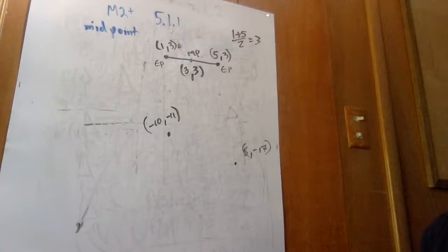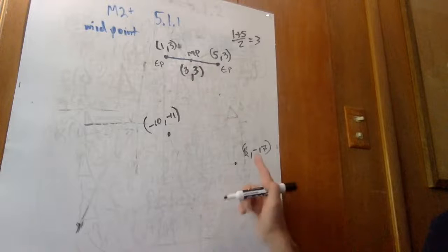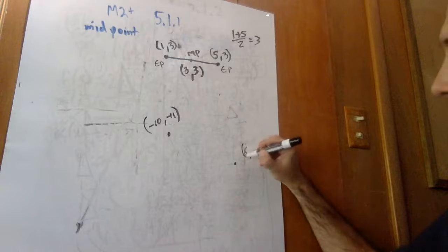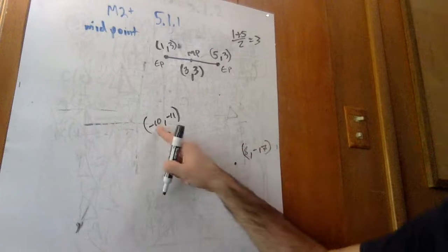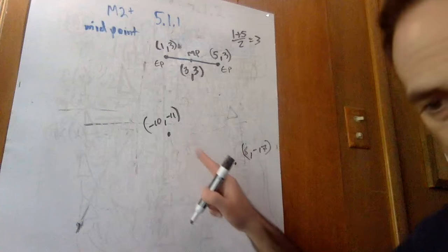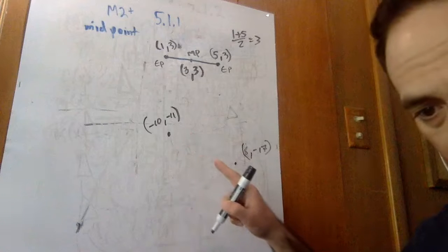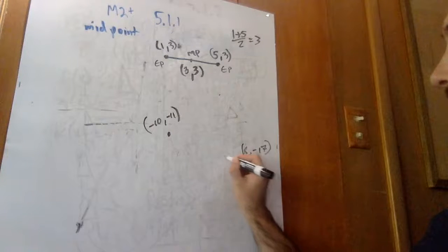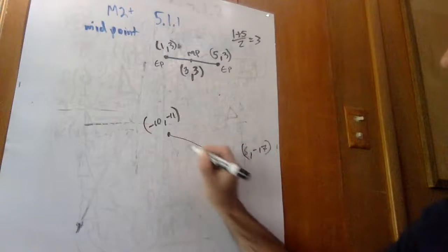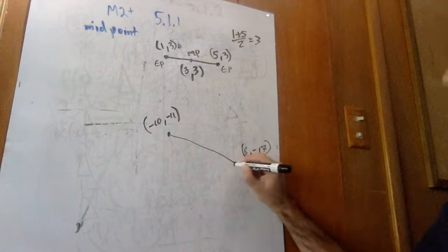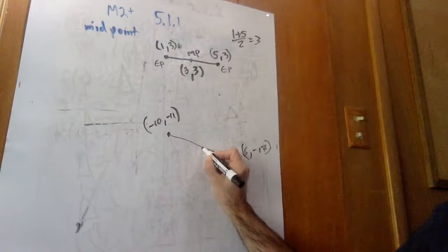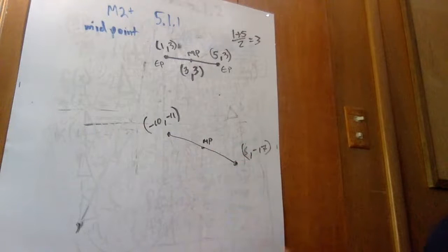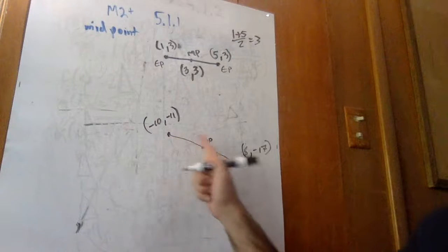The same idea is going to apply when we have two different points that are not on the same level. Here we have (negative 10, negative 11), and down here we have (8, negative 17). So if I connect these, the midpoint is going to be about there. We've got our endpoints and the midpoint.